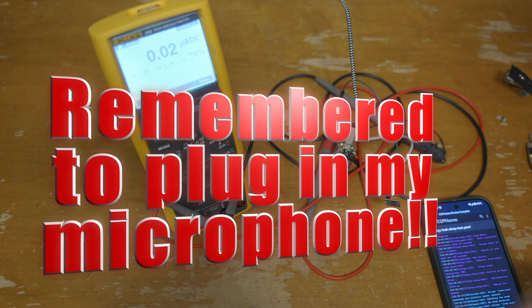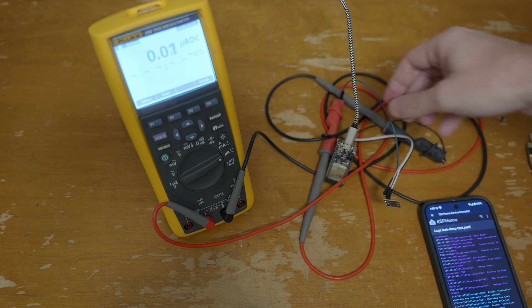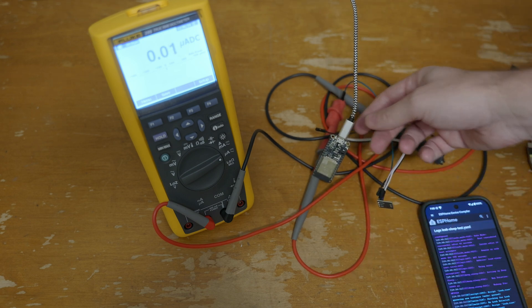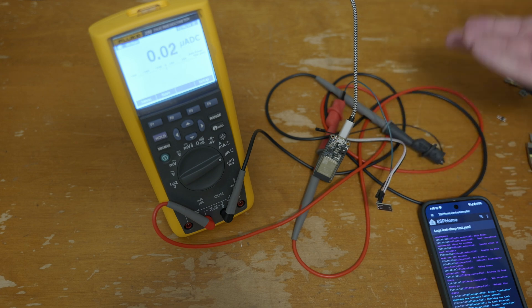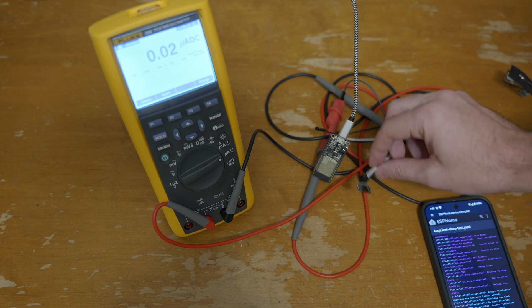All right, so we've got a little test set up just to demonstrate the power consumption on this sensor. And what I've got is an ESP32 being powered by USB. You could be powered off of battery. It wouldn't really make any difference for this particular example.